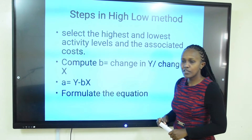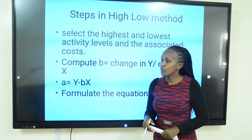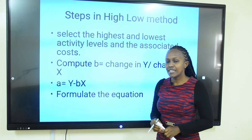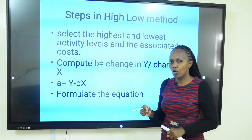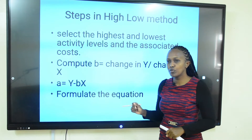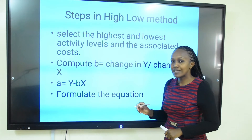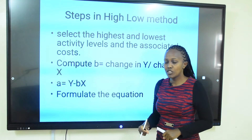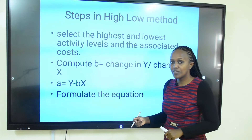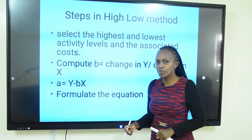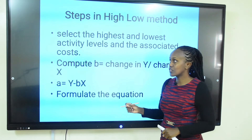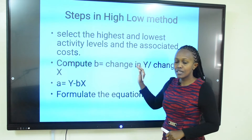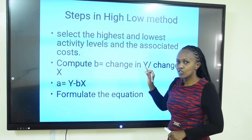So what are the steps in the high-low method? First, we select the highest activity level. If output is our cost driver, we look at what is the highest output achieved and the associated cost. We also look at the lowest activity level — the least output during the period and its associated cost. So step one is to determine the highest and lowest levels of activity with the associated costs.